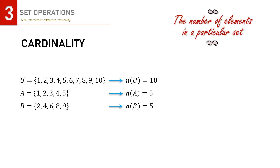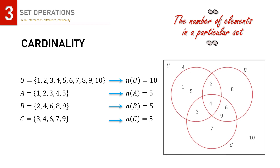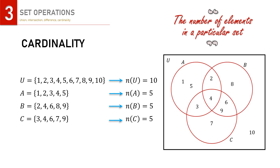Similar to the two-set case, we can apply the same procedures when dealing with three sets. Adding a new set C with five elements, so n(C) = 5, the Venn diagram now has more than one intersection. There are three pairwise intersections — A∩B, A∩C, and B∩C — and one intersection involving all three sets, A∩B∩C.